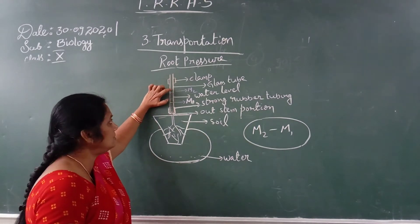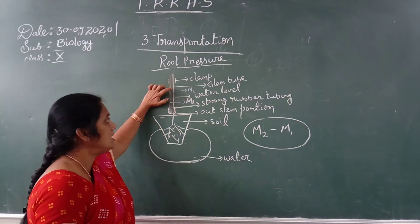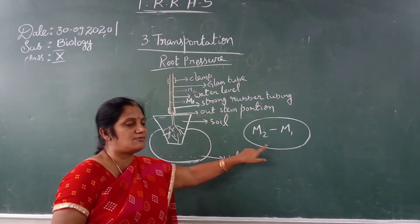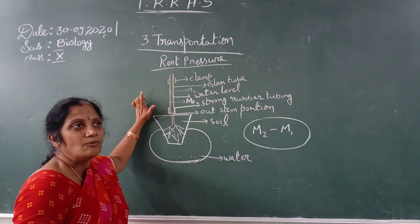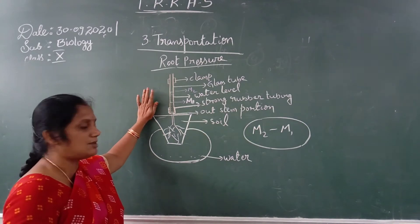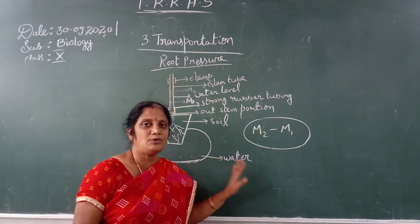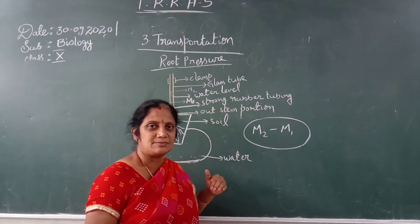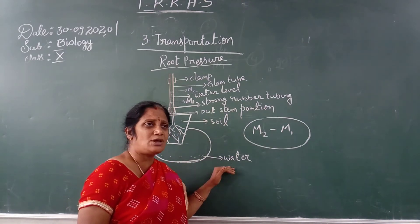When you observe after one to two hours, the water level will have slowly increased to M2. So M2 minus M1 gives us the increase in water level over one hour. This root pressure helps transport water upward, but only up to a certain height. So what about very tall plants?